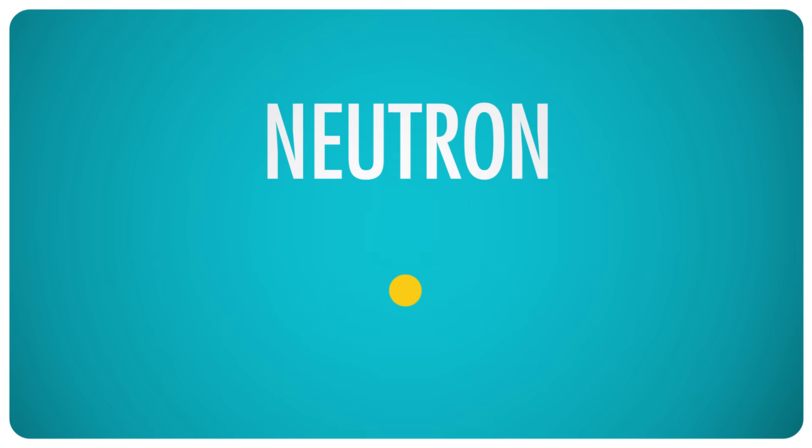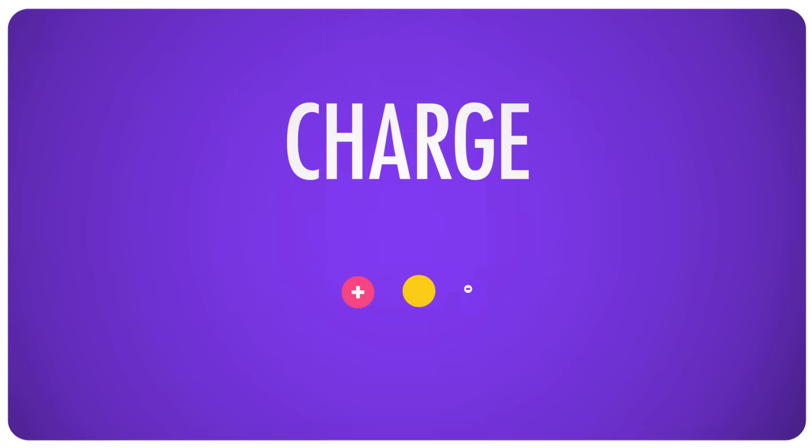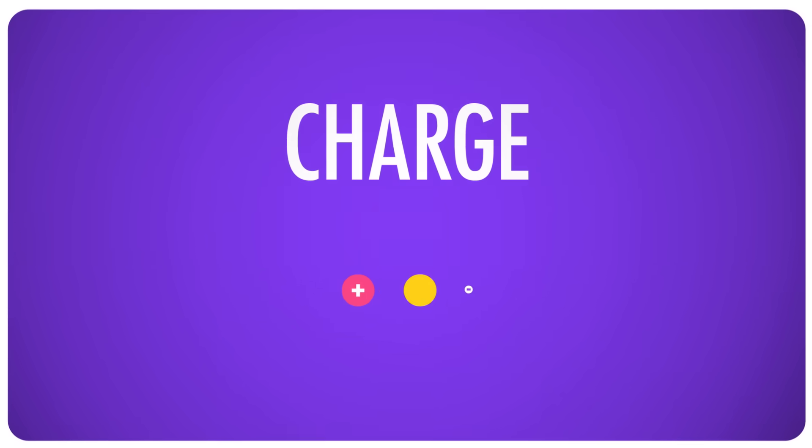Neutrons are important too, of course, in their own way, but they don't change what element an atom is. One of the two keys to all things chemical is charge. We'll discuss that in another episode. And since neutrons don't have any charge, they mostly don't change the properties of an atom. But they are nonetheless vital.